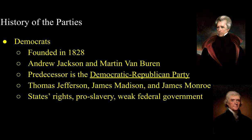Let's start with the Democrats. The Democratic Party was founded in 1828 and is actually the world's oldest active political party. Key founders included Andrew Jackson and Martin Van Buren. The Democratic Party was founded on the ideas put forth by the former Democratic-Republican Party, which was founded by key founding fathers including Thomas Jefferson, James Madison, and James Monroe.